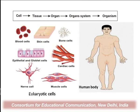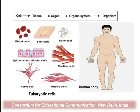The human body consists of trillions of cells. There are 200 types of cells responsible for formation of the human body. In this slide, you can see blood cells, skin cells, bone cells, epithelium goblet cells, cardiac cells, nerve cells, and muscle cells. These cells perform specialized functions in the body and their shapes are very different.